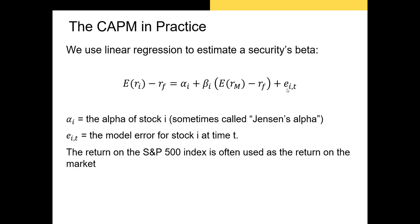The middle component is just beta times the market risk premium, which is the expected return on the market minus the risk-free rate. And then lastly, we have e sub i comma t. This e is an error term — the model error for stock i at time t. This is expected to be zero, but this is the error term for when we actually use linear regression, or OLS. This will essentially be the value that makes both sides balance for every single observation using real-world data.